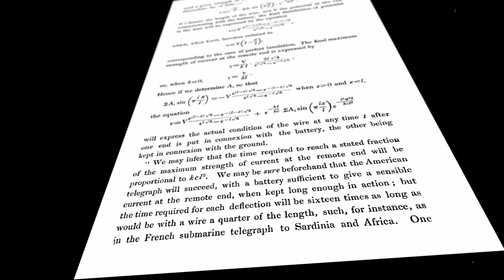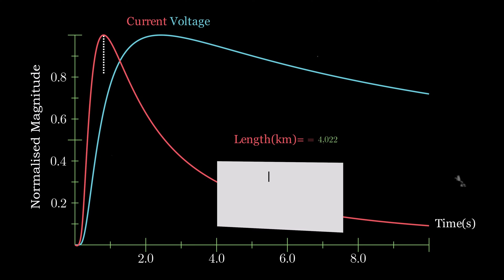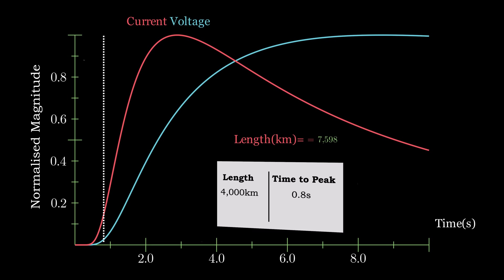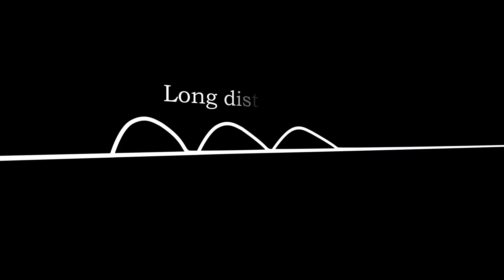Thomson also remarks on a practical observation that might have catastrophic consequences on the prospect of a transatlantic telegraph cable. If you plot the arrival curve for various distances and you note the peak of the current pulse, the time to peak increases as the square of the distance travelled. So here at 8,000 kilometres, the time to peak is four times what it was at 4,000 kilometres. This is hugely significant to telegraphers because you need one pulse to be gone before you can transmit another.